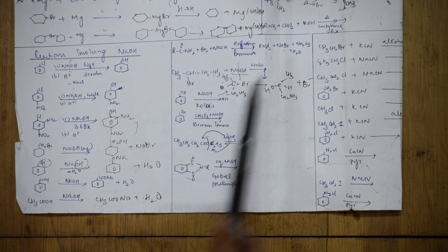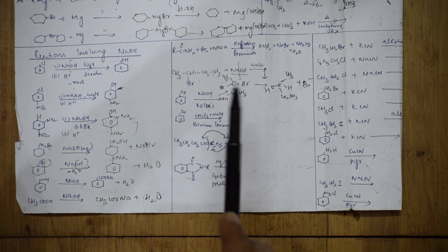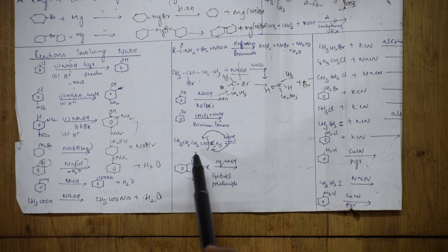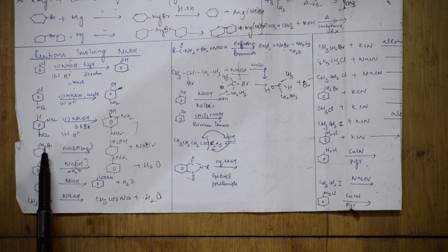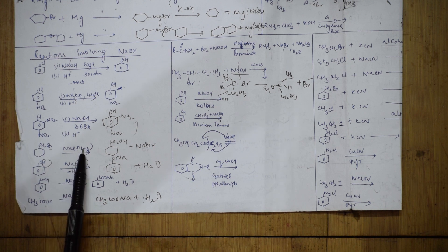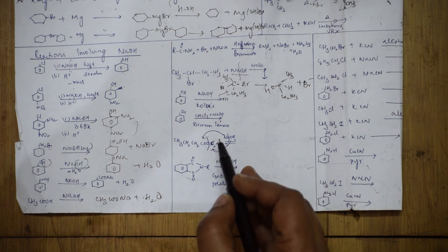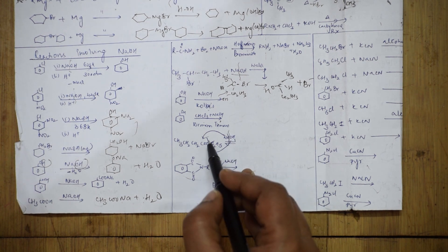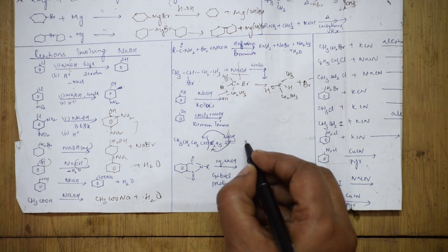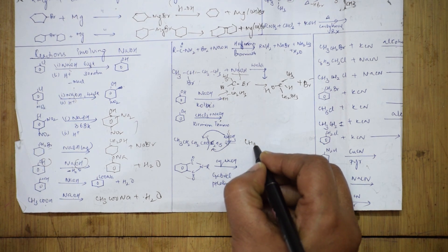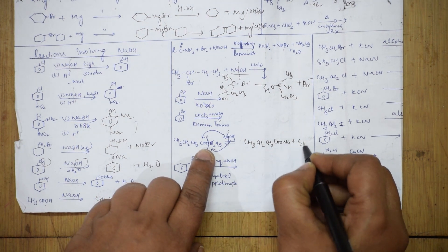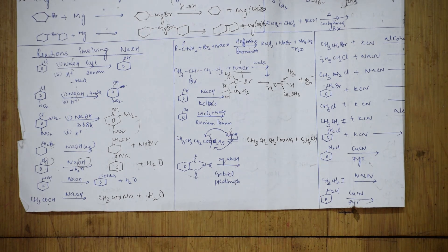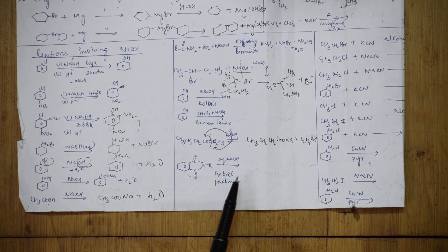I also covered Kolbe's and Reimer-Tiemann reactions just to show that sodium hydroxide is common to all. With an ester and sodium hydroxide, the bond breaks to give a salt and water — like alkyl halide where Br is replaced by OH. With an ester, it breaks to give CH₃CH₂CH₂COO⁻Na⁺ plus C₂H₅OH. This is your saponification/Gabriel phthalimide synthesis done in earlier reactions.